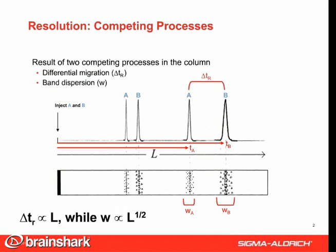One interesting tidbit: the distance between the bands, delta t sub r, increases with the length traveled — it is proportionate to the length — while the width of each band is proportionate only to the square root of the length. This means that delta t sub r, the differential migration, will always be greater than the band dispersion. Were this not the case, you would basically achieve nothing.